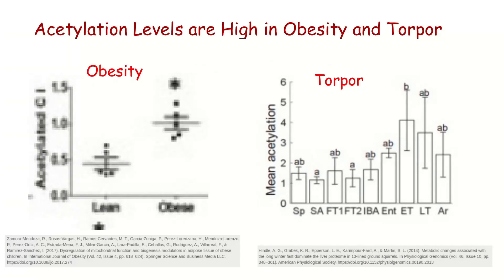Furthermore, if you look at obese humans and torpid animals, we see highly acetylated mitochondrial enzymes. In children, obese children have about double the amount of acetylated complex I compared to lean children. Complex I is the mitochondrial complex that oxidizes NADH to NAD+ and passes those electrons through to create ATP. If you have acetylated complex I and you can't oxidize NADH, this again adds to that downward spiral of acetylation.